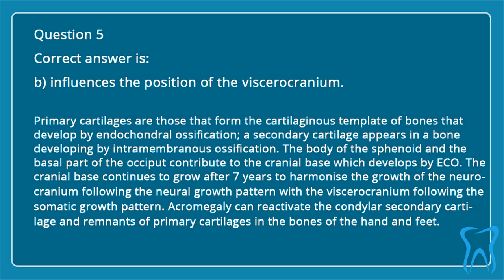Primary cartilages are those that form the cartilaginous template of bones that develop by endochondral ossification; a secondary cartilage appears in a bone developing by intramembranous ossification. The body of the sphenoid and the basal part of the occiput contribute to the cranial base, which develops by endochondral ossification. The cranial base continues to grow after 7 years to harmonize the neural growth pattern of the neurocranium with the somatic growth pattern of the viscerocranium. Acromegaly can reactivate the condylar secondary cartilage and remnants of primary cartilages in the bones of the hands and feet.